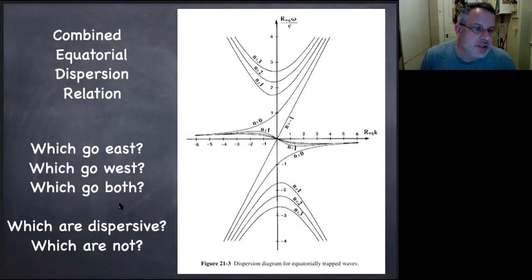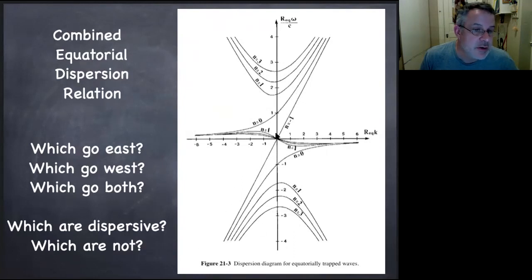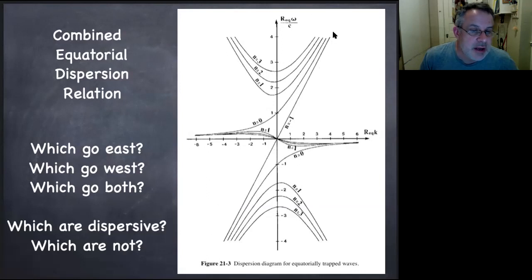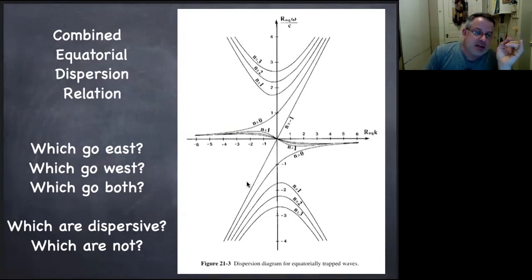Which waves go west, which go east, which go both? For k equals negative, everything above is going westward in phase; everything below is going eastward in phase. The Rossby wave is always westward in phase. For k positive, everything negative in omega is going westward and everything positive is going eastward. So you've got eastward propagating Kelvin waves on both sides, westward propagating Rossby waves. In terms of group velocity, you have to look at the slope of all these lines — positive slope gives eastward, negative gives westward propagation.